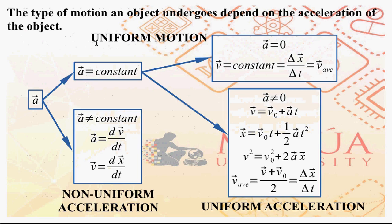The type of motion an object will undergo depends upon the acceleration of the object. If the acceleration is constant at zero, you have uniform motion. For uniform motion, the velocity is constant and is just equal to delta x divided by delta t, which equals average velocity.